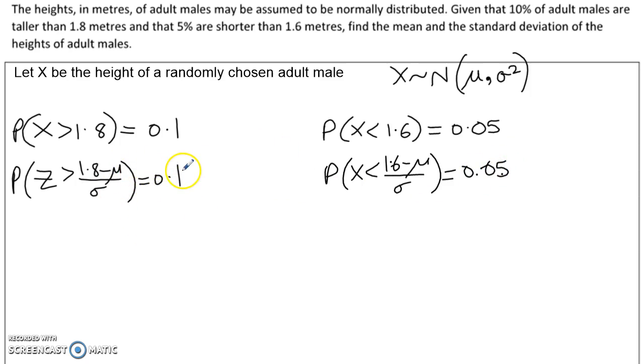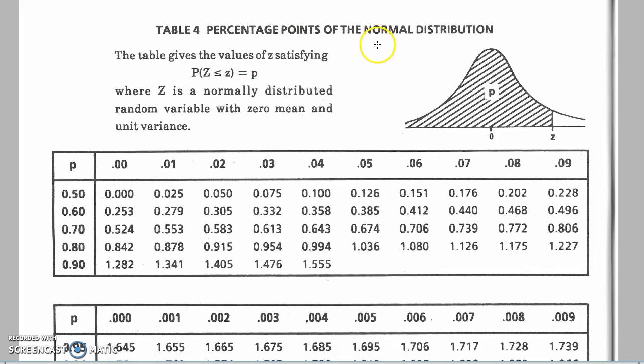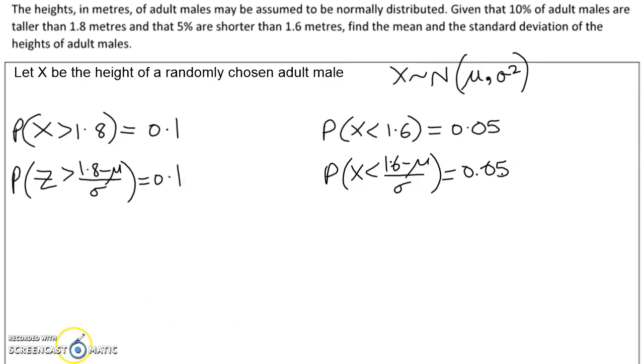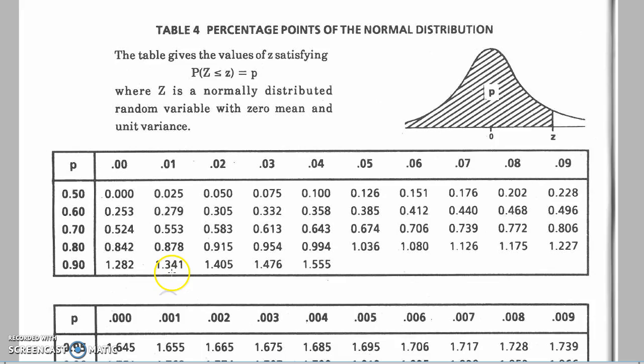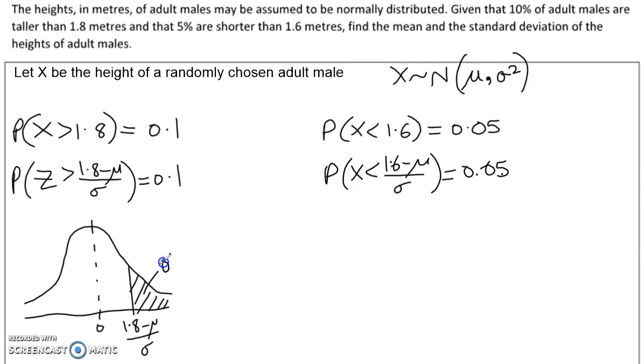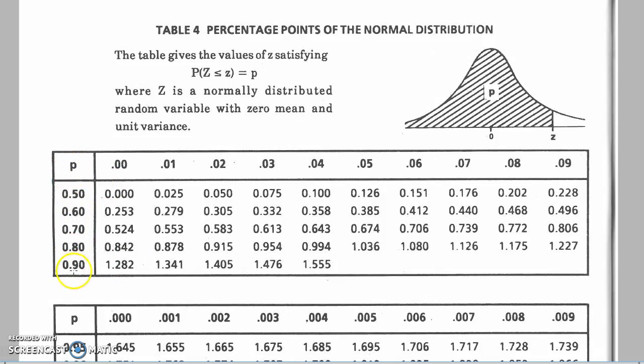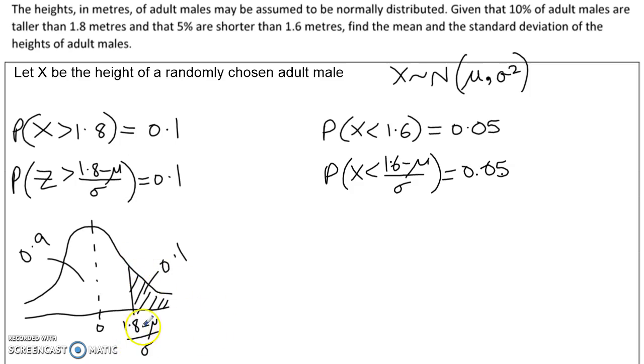Now we're in a situation where we know the probabilities but we don't know the z values, so the table we want is the percentage points tables. I'm going to do a quick sketch just to make sure I don't make any errors. Here, the area to the right of this z value is 0.1. It's important to remember the numbers in this table are the area to the left of each z value. So the area to the right is 0.1, then clearly the area to the left must be 0.9. We're going to look in the tables for a z value associated with p-value of 0.9, which gives us 1.282.